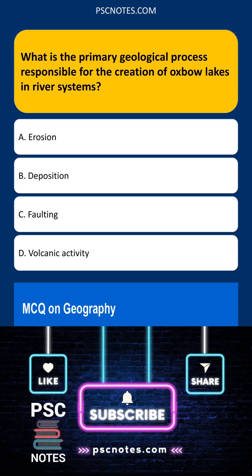Faulting is incorrect because faulting is associated with the movement of the earth's crust along fractures, not the processes responsible for river meander migration and the formation of oxbow lakes.